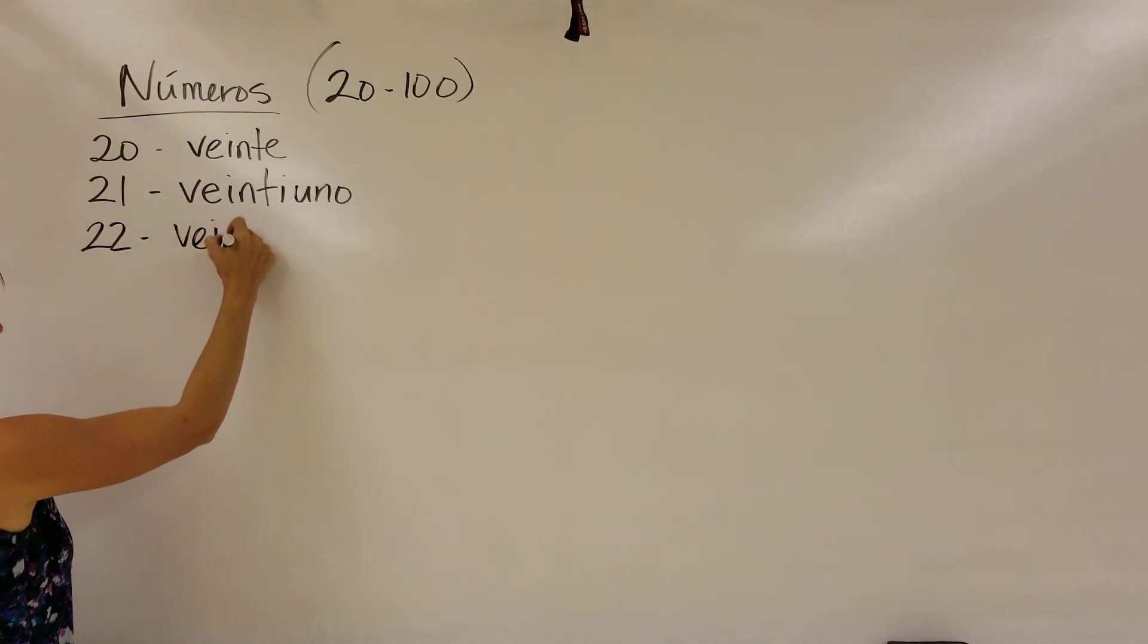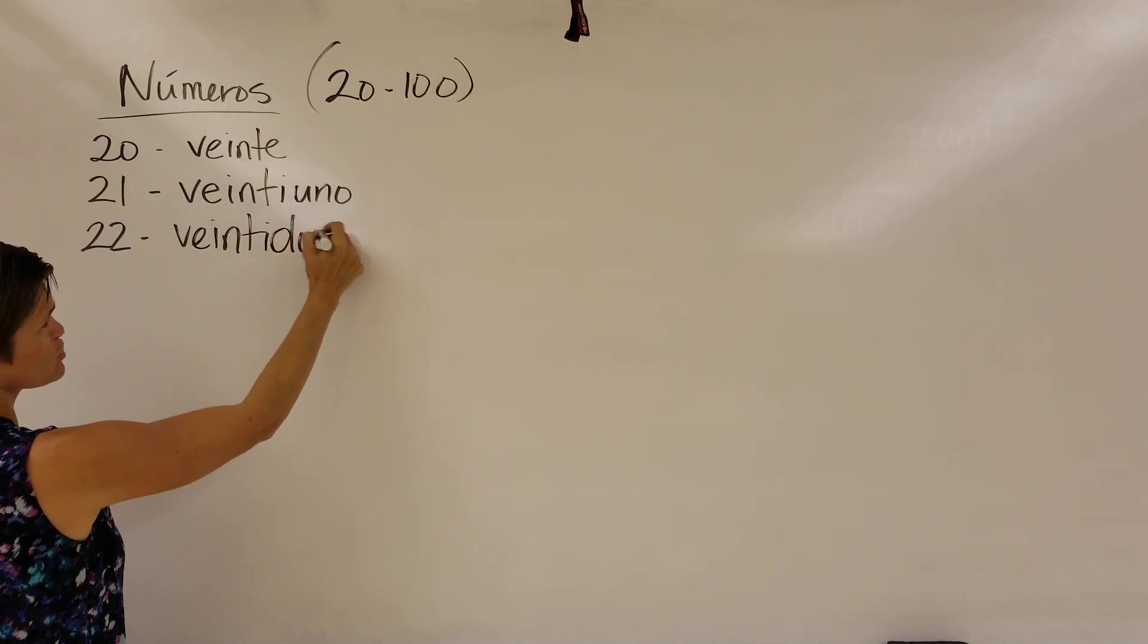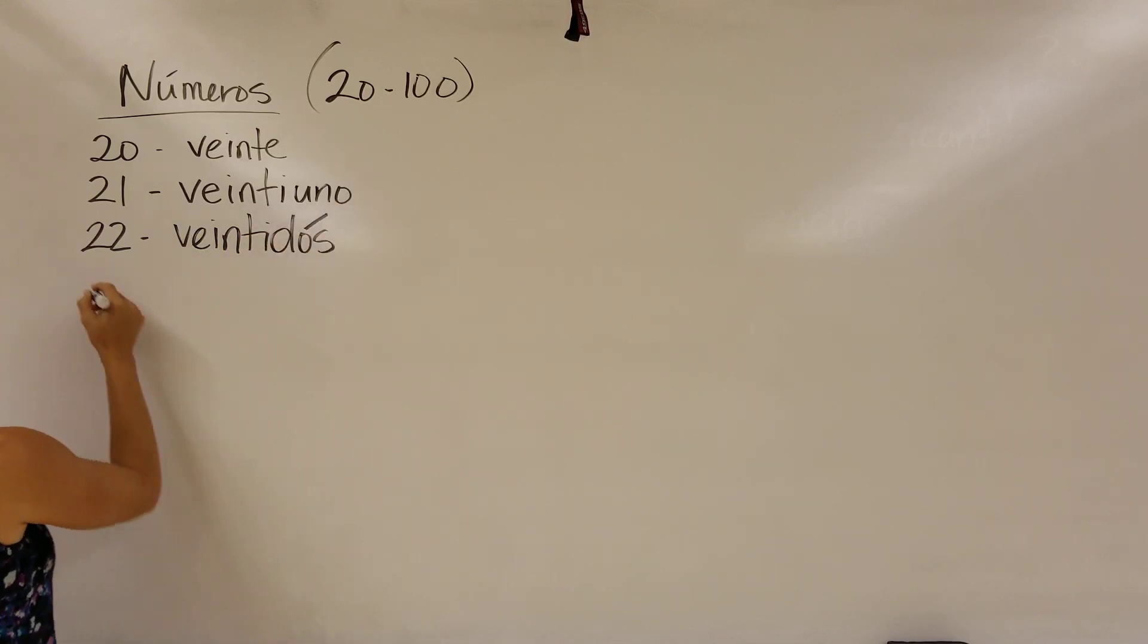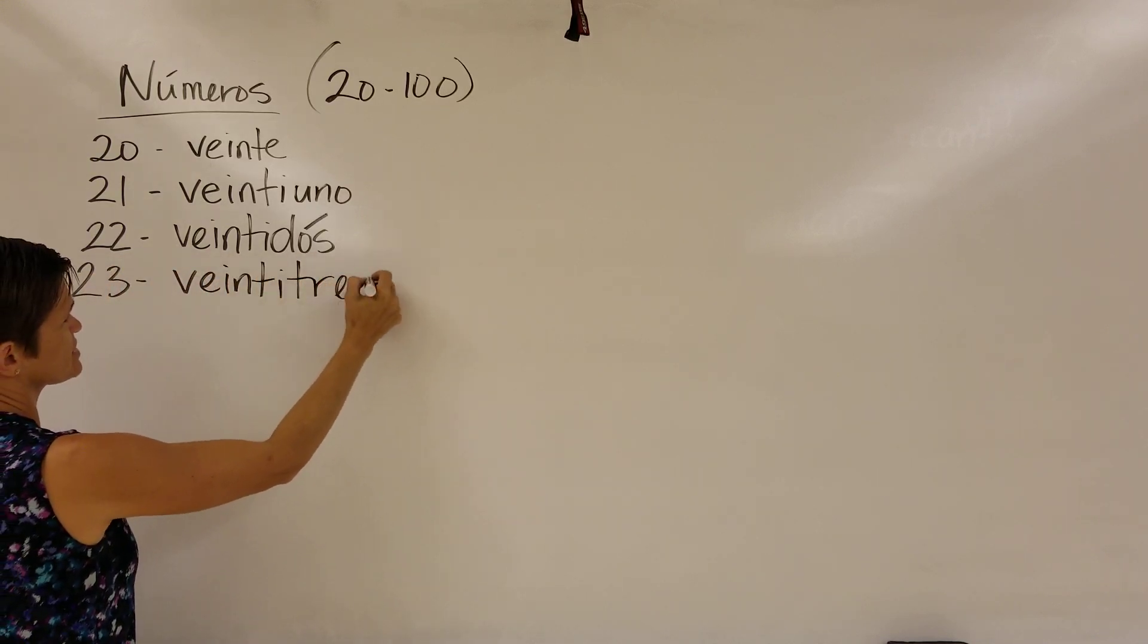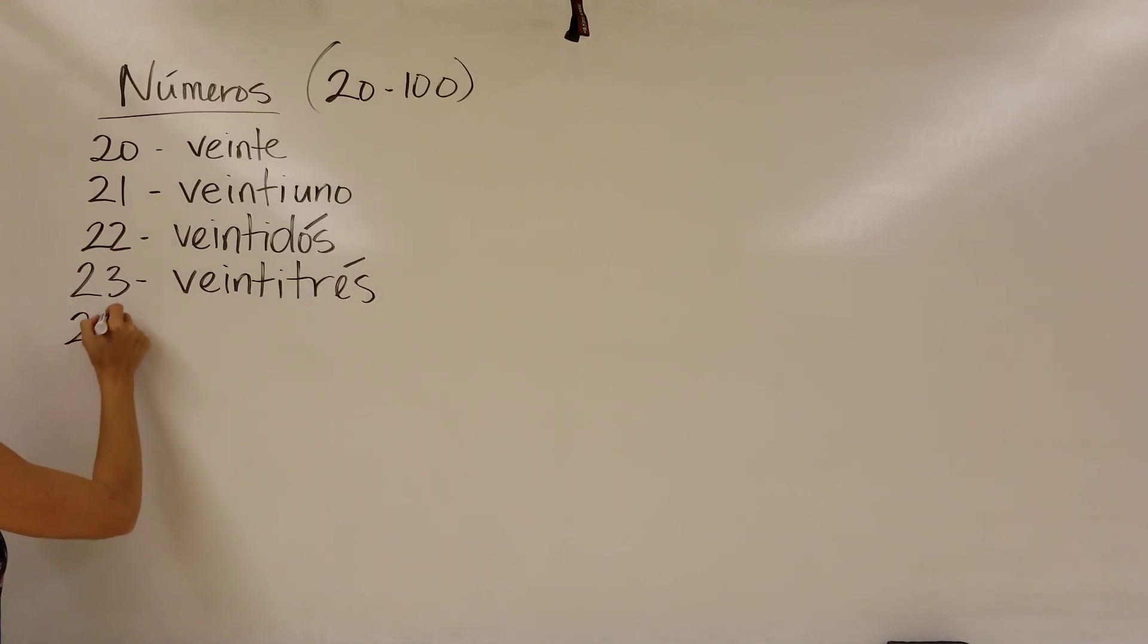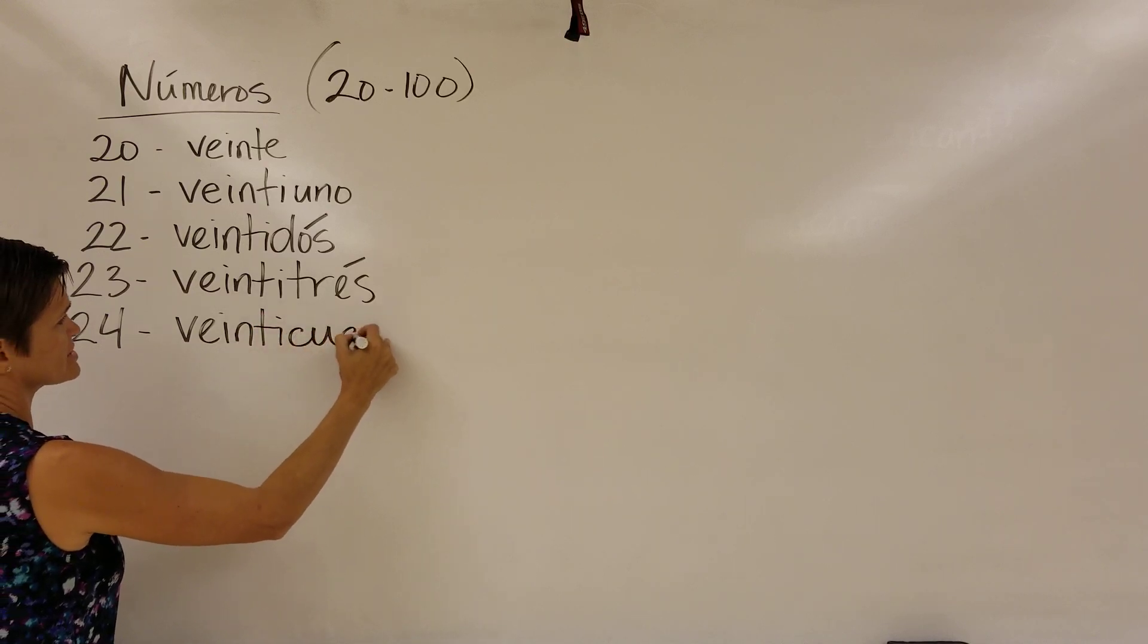Veintidós, same thing. We start with veinti, we add dos, which is the number 2. This one has a little accent on it. We'll talk about why in just a second. Veintitrés also has an accent. Veinticuatro. It does not have an accent.